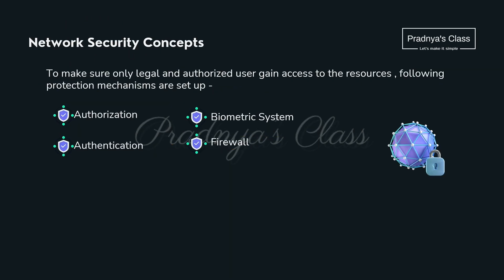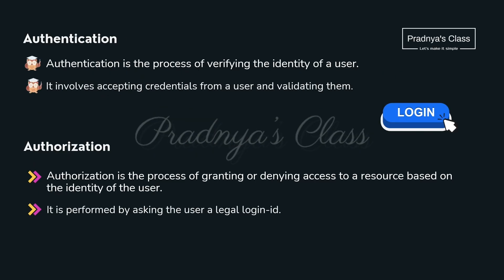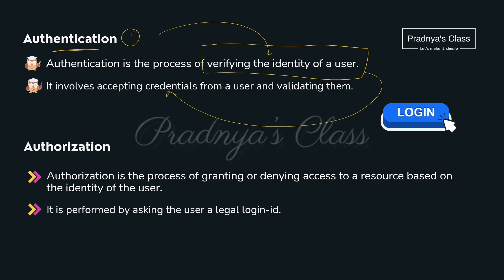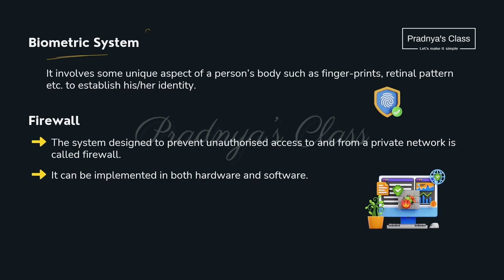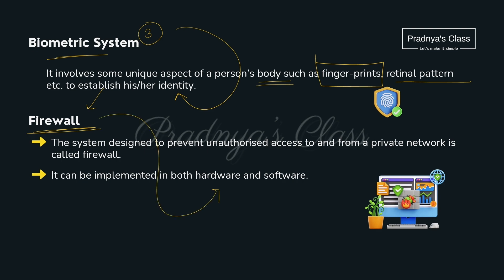Since we are sharing data over the network, it's our responsibility to protect it. Here are some protection mechanisms: authentication, authorization, biometric system, and firewall. Authentication is verifying the identity of the user by accessing and validating credentials. Authorization is the process of granting or denying access to the user based on their identity, generally done with a login ID. A biometric system identifies a person using unique physical traits like fingerprints or retinal patterns. A firewall, available in both hardware and software form, is used to prevent unauthorized access. In this way we studied 4 types of protection mechanisms.